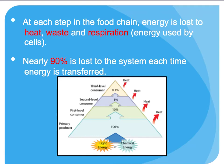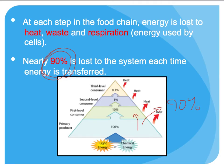One surprising thing about a food chain is that energy is lost to heat, waste, and respiration as you move up the food chain. About 90% of that energy is lost each time it is transferred. Starting with light or chemical energy at the primary producer (100%), when a cow eats that plant, 90% of the energy is lost as heat or through respiration during the transfer from primary producer to first-level consumer. This 90% loss continues to occur at every level.